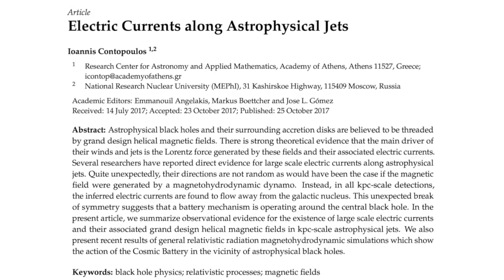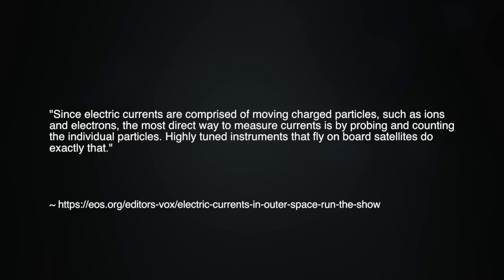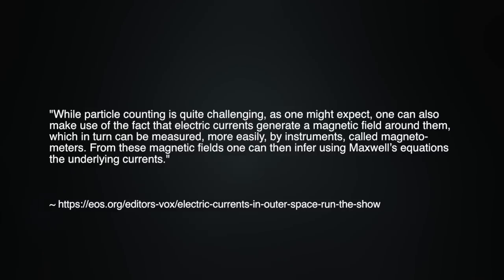On the challenging task of measuring electric currents in space, the authors write: Since electric currents are comprised of moving charged particles, such as ions and electrons, the most direct way to measure currents is by probing and counting the individual particles. Highly tuned instruments that fly on board satellites do exactly that. While particle counting is quite challenging, as one might expect, one can also make use of the fact that electric currents generate a magnetic field around them, which in turn can be measured more easily by instruments called magnetometers. From these magnetic fields, one can then infer, using Maxwell's equations, the underlying currents.